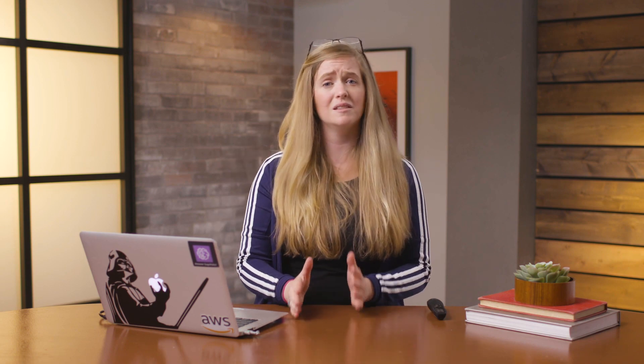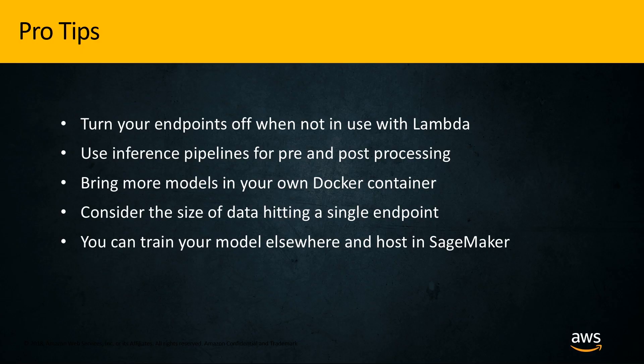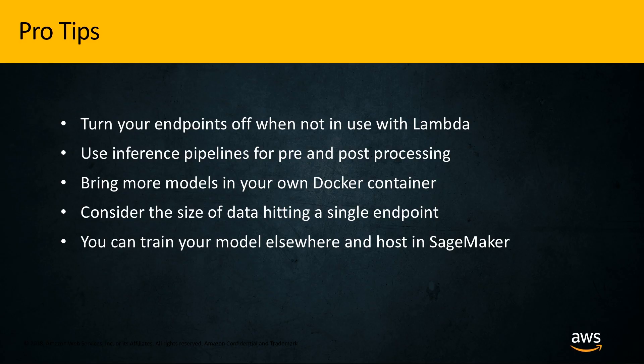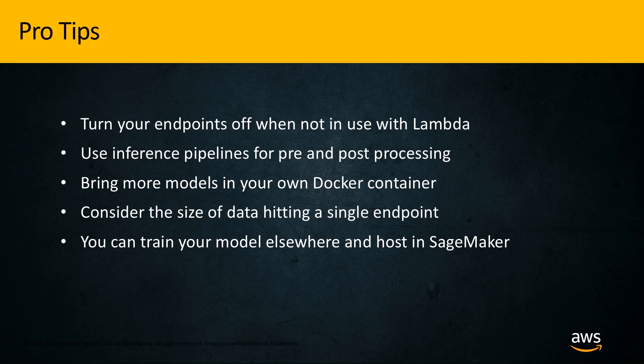You can also have more models in a single Docker container. Even though it's one Docker container per training cluster, you can definitely have multiple models in that container — you just have to write the code appropriately and make sure you have sufficient infrastructure. Definitely think about the amount of data hitting a single endpoint; if you've got more than a handful of megabytes, you want to be sending that up against batch transform rather than the endpoint. And just to hit this home: you can absolutely train your model somewhere else and then host it in SageMaker. If you like your training platform on your laptop or somewhere else, check out the blog series about getting it into the right format and then hosting it in SageMaker to use the endpoints or batch transforms.